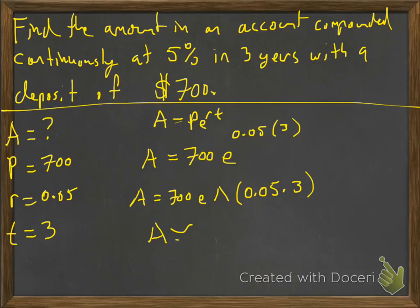So doing all that, you're going to get your amount is about $813.28. So that's our amount, that's what we have after three years.